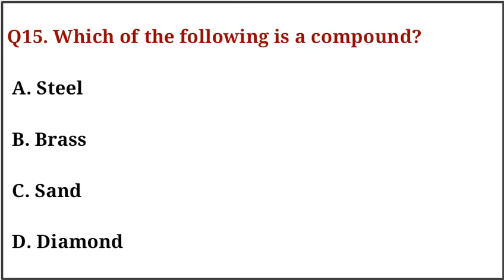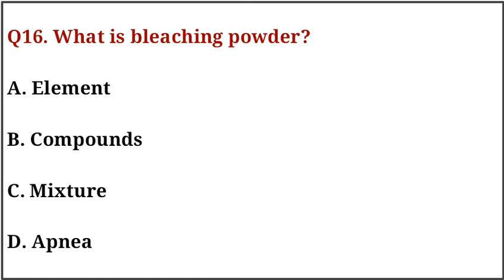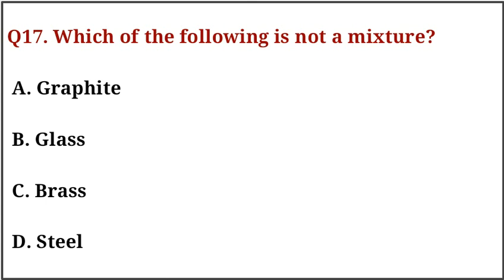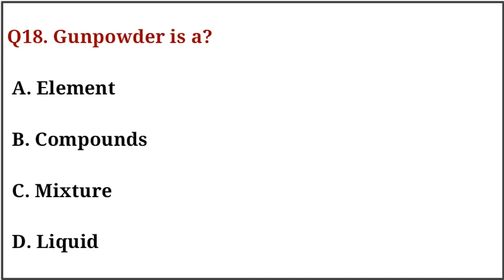Question number fifteen: which of the following is a compound? The correct answer is option number C. Question number sixteen: the correct answer is option number B, that is it is a compound. Question number seventeen: which of the following is not a mixture? The correct answer is option number A, that is graphite. Question number eighteen: the correct answer is option number C, mixture.